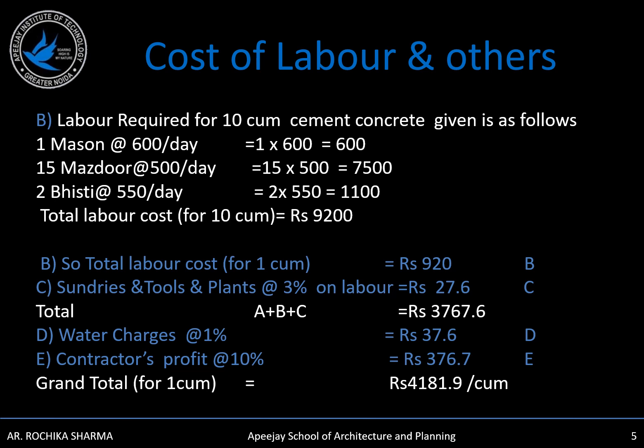For labor, it is given that 10 cubic meters of work will be done by 1 mason, 15 mazdoor, and 2 bhishti. 1 mason at the rate of Rs. 600 per day gives Rs. 600; 15 mazdoor at the rate of Rs. 500 gives Rs. 7500; 2 bhishti at the rate of Rs. 550 per day gives Rs. 1100. Total labor cost for 10 cubic meters is Rs. 9200. Since we are analyzing the rate for 1 cubic meter, the labor cost for 1 cubic meter will be Rs. 920.